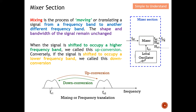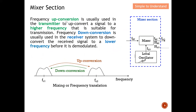When the signal is shifted to occupy a higher frequency band, we call this up conversion. For example, a low frequency signal moved to a higher frequency is up conversion. Conversely, when the signal is shifted to a lower frequency band, we call this down conversion. Frequency up conversion is typically used in the transmitter, while down conversion is used in the receiver to down-convert the received signal to a lower frequency before demodulation.